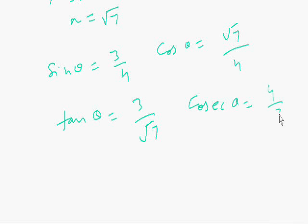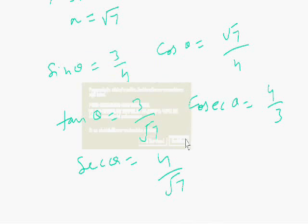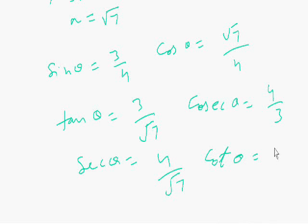Cosec theta will be 4 divided by 3. Sin theta is 3 divided by 4. Cos theta is square root 7 divided by 4. Tan theta will be 3 divided by square root 7. Sec theta will be 4 divided by square root 7, and cot theta will be square root 7 divided by 3.